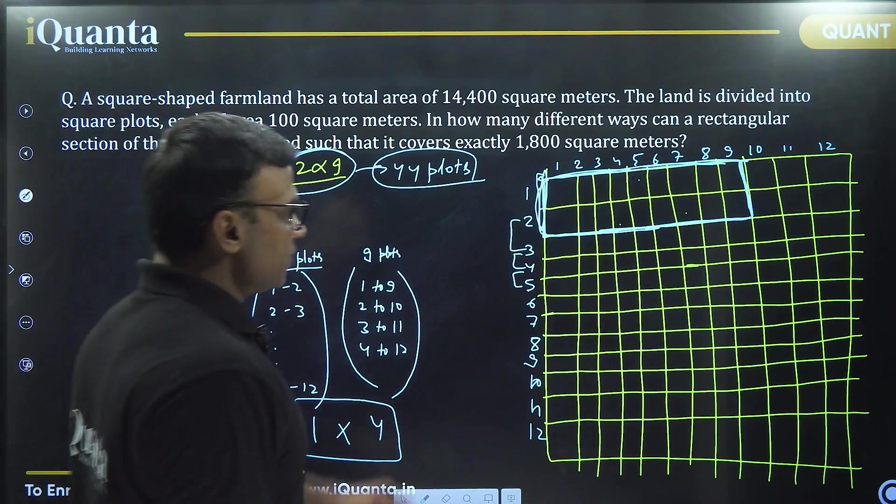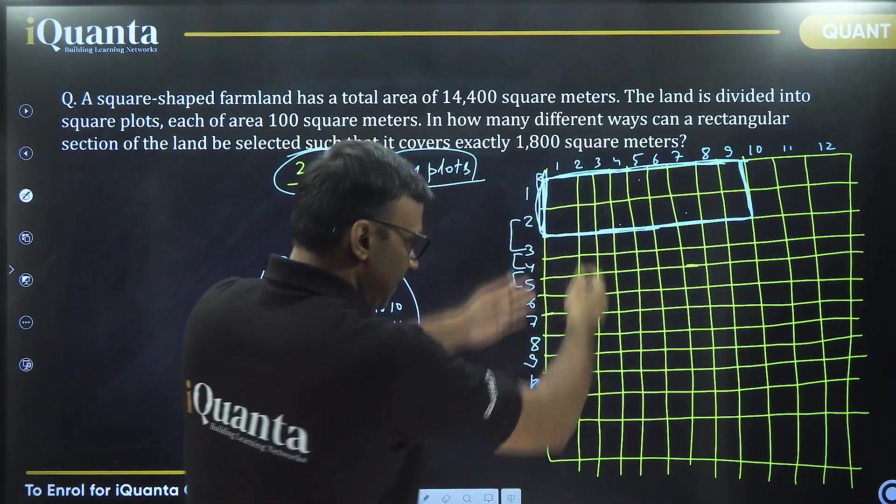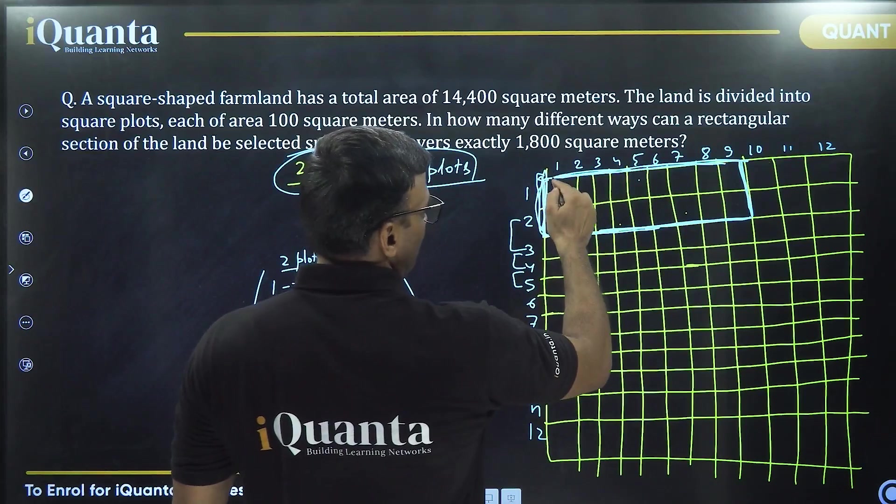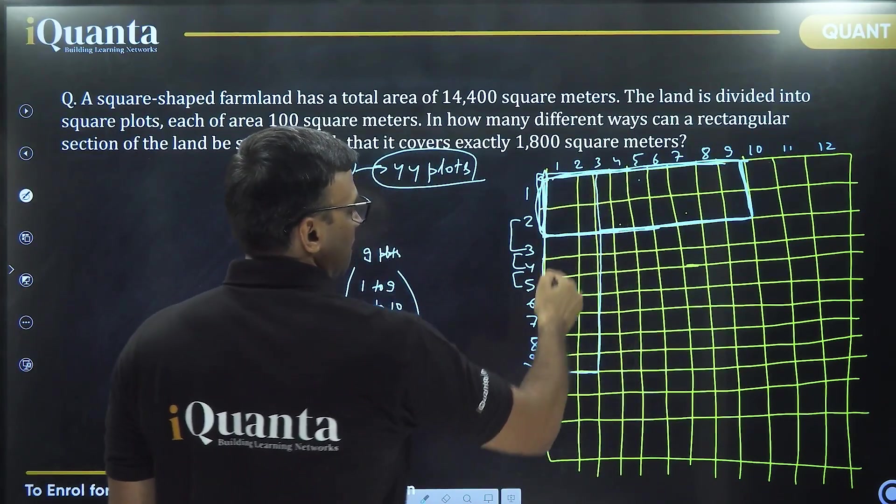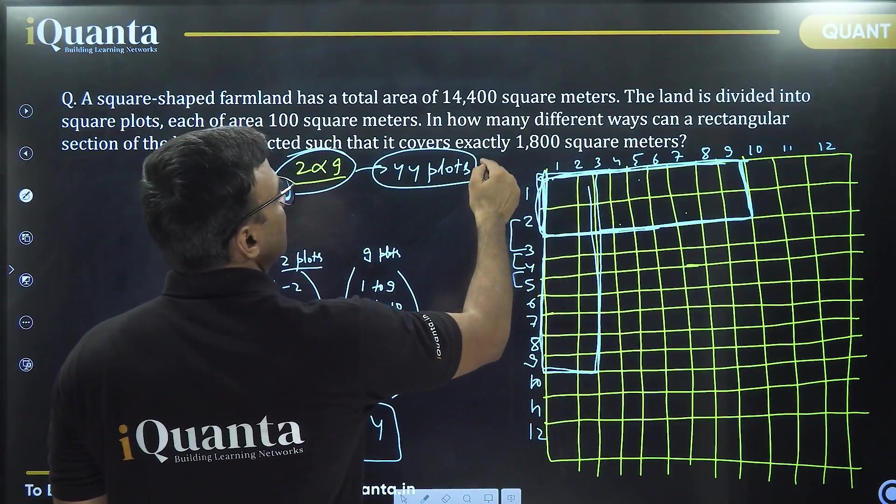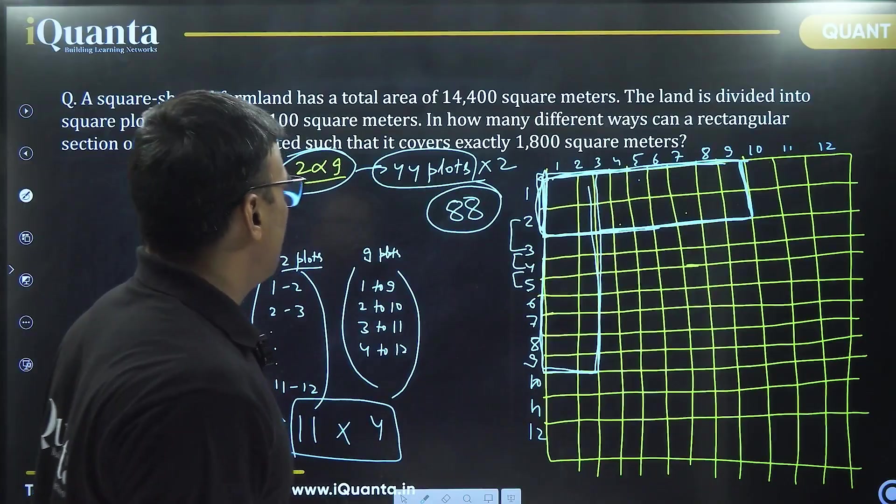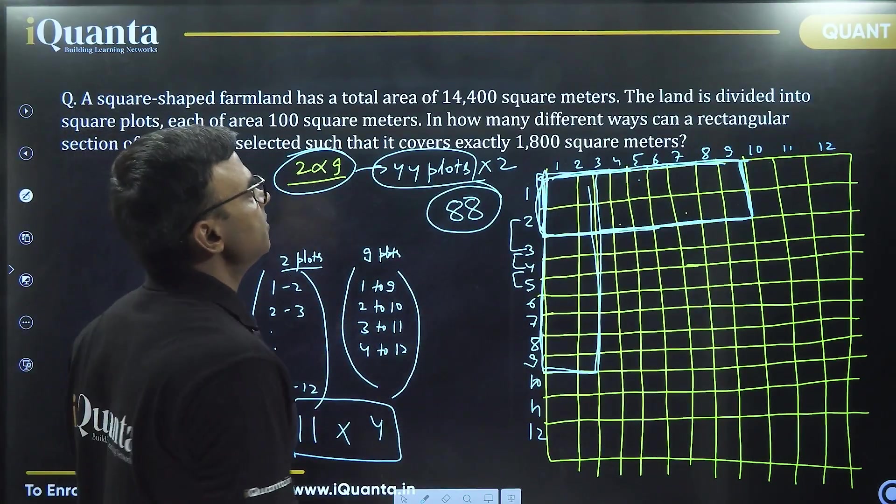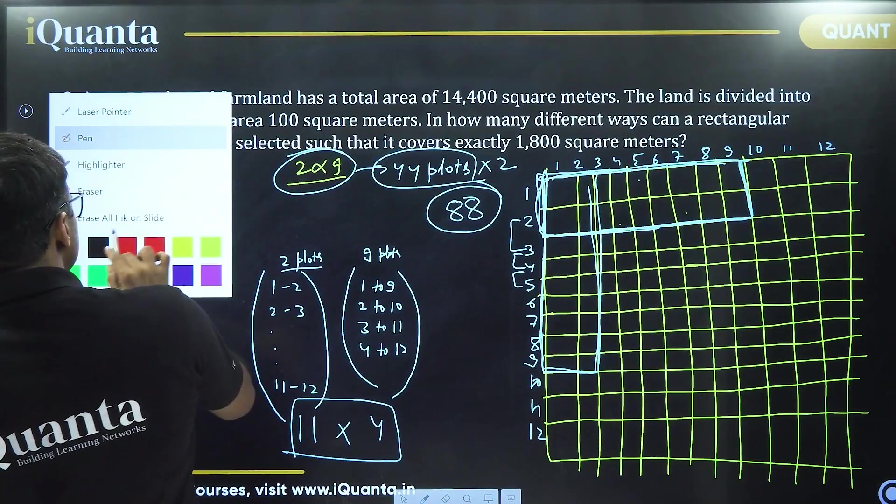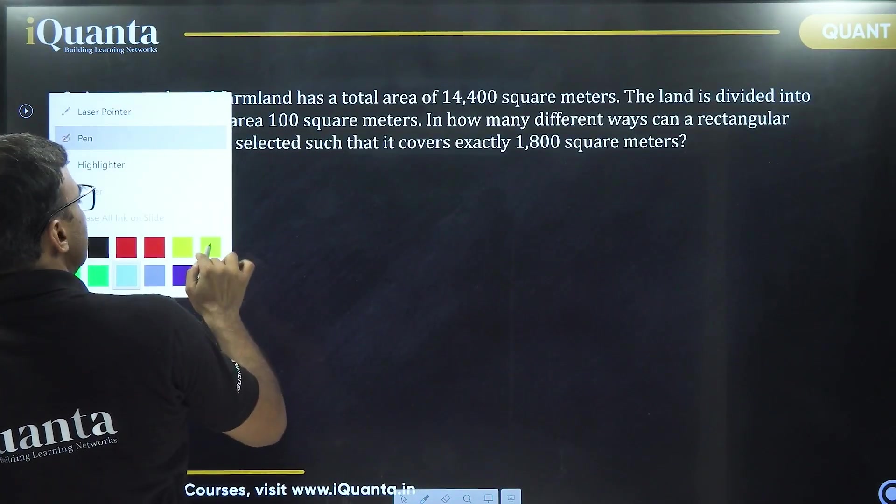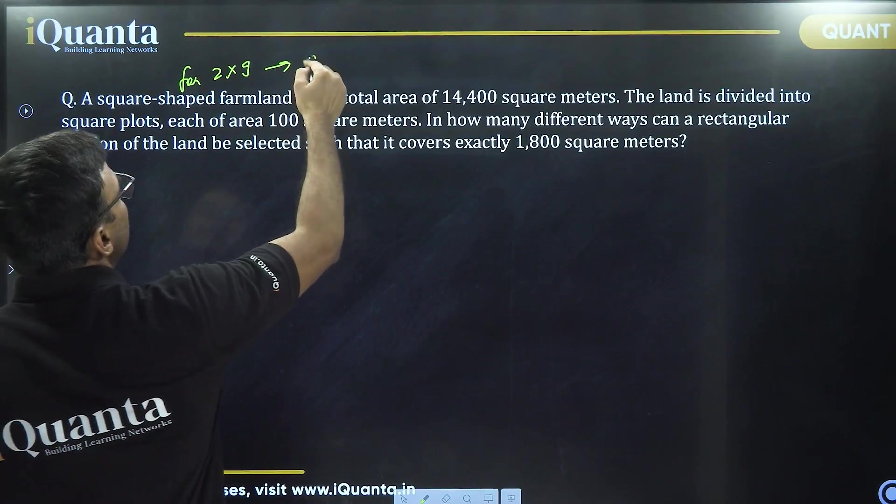But this is only for this orientation where I have horizontal. Now the same thing can have a vertical orientation. So 1, 2 here and 1 to 9 here like this. So just double it. So 88 plots total of the dimension 2 into 9. We are done with only one case yet. For 2 into 9 orientation, we have 88 plots.